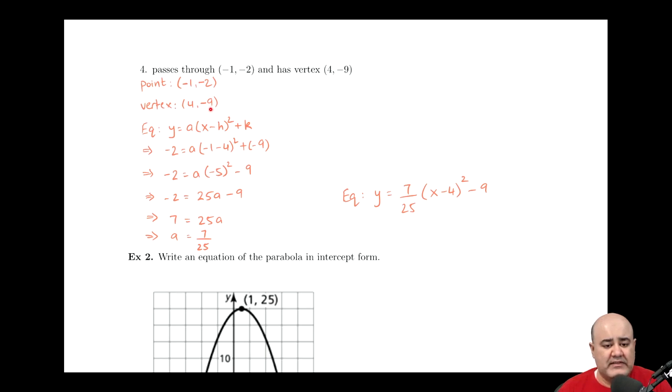Since we're given the vertex, it's probably best to start with a vertex form, which is y equals some constant a times the quantity x minus h squared plus k.